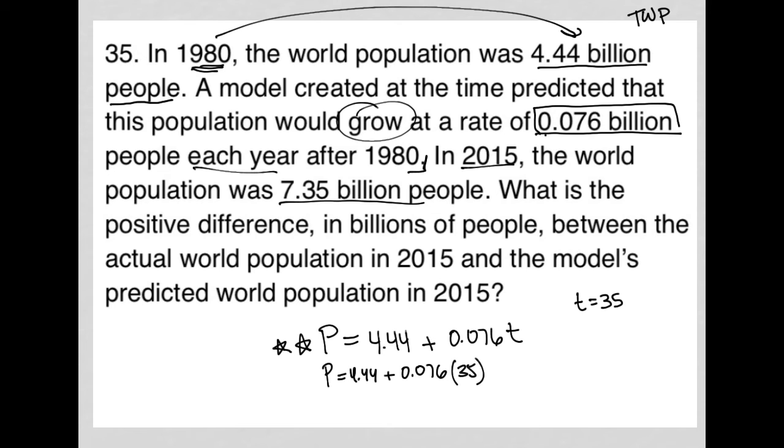What I get is 7.1. So the prediction was 7.1 billion. But the actual was 7.35 billion. So what's the question we want to know? What is the positive difference? Well, that difference is just 7.35 minus 7.1, which is 0.25.